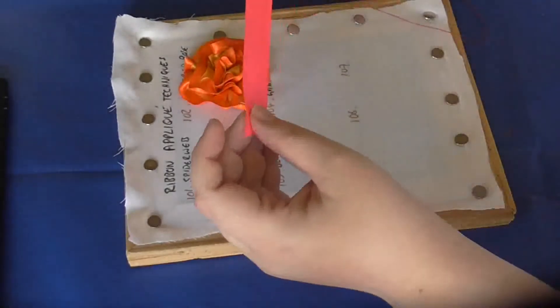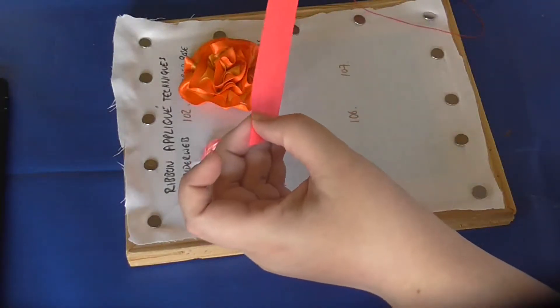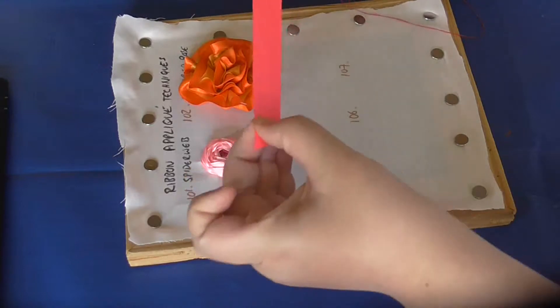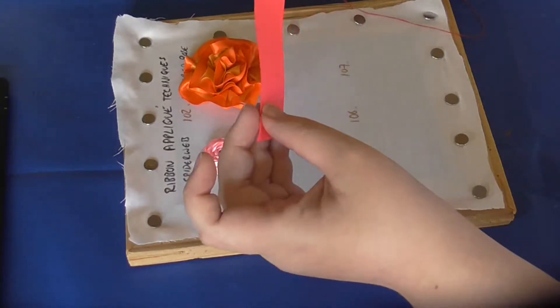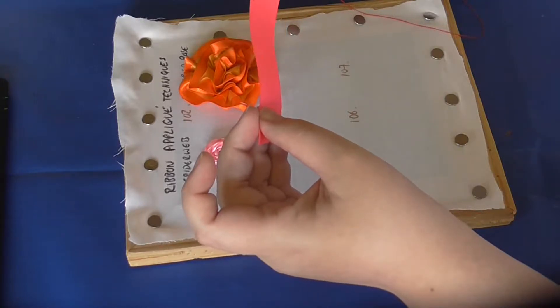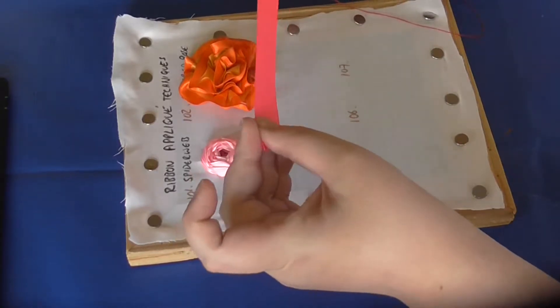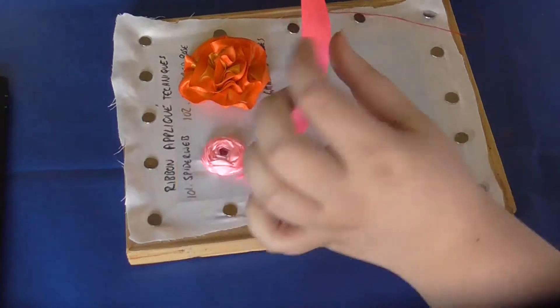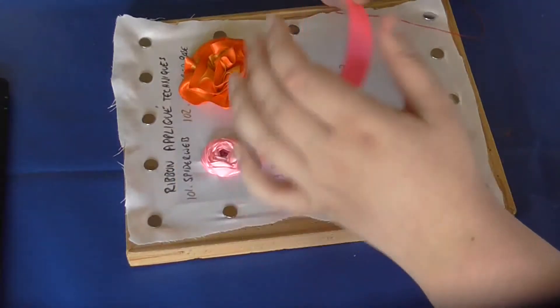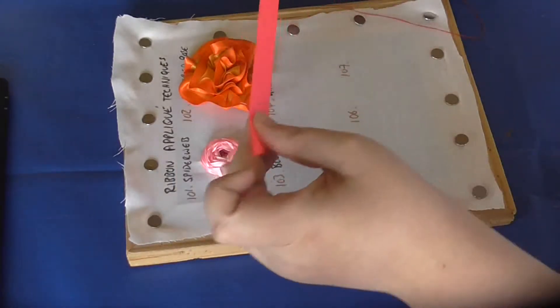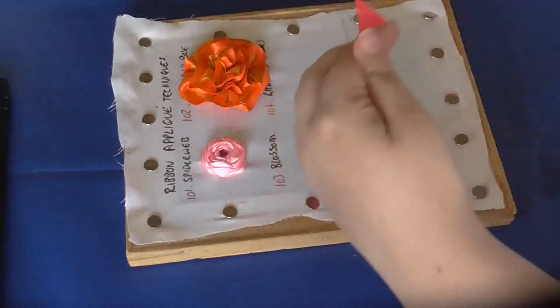A blossom traditionally has five petals. You can go up to about seven, but it would have quite a large gap in the middle, so you'd need to add something in the middle as well.